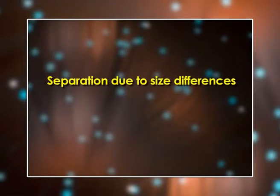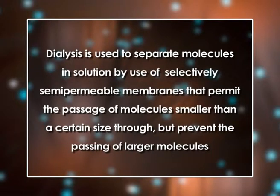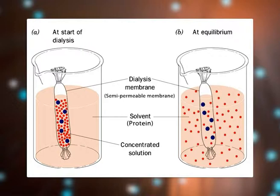Separation due to size differences. First, dialysis: this is used to separate molecules in solution using selectively semipermeable membranes that permit the passage of molecules smaller than a certain size but prevent the passage of larger molecules. A protein solution is placed in dialysis tubing which is sealed and placed into a large volume of water or buffer that is slowly stirred. Low molecular weight solutes flow through the bag, but the large molecular weight protein molecules remain inside.